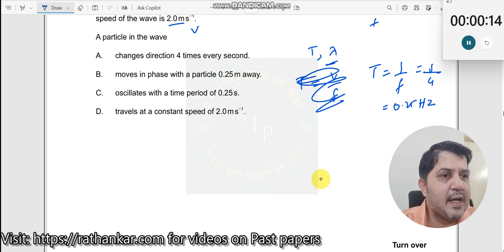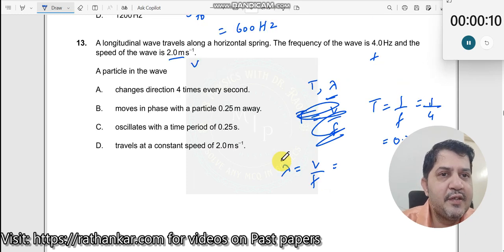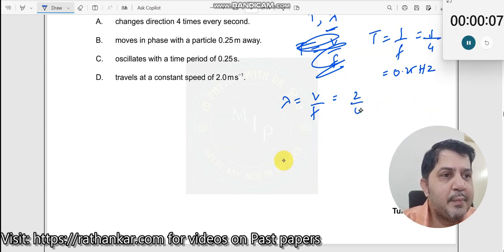And the second one is lambda. What is lambda? Lambda is equal to V by F, which should now be, what is V? 2, 2 divided by 4, which should be equal to half. So half meter per second.